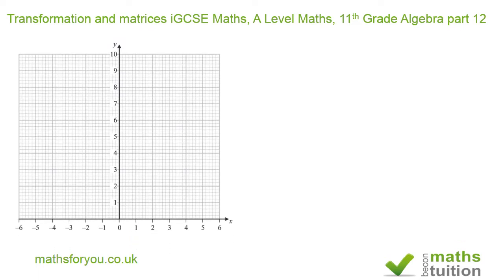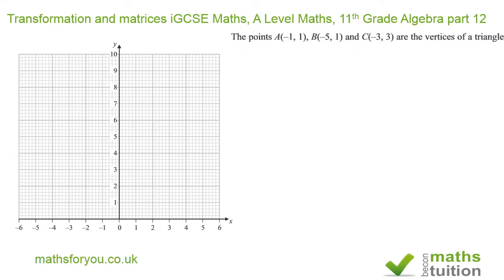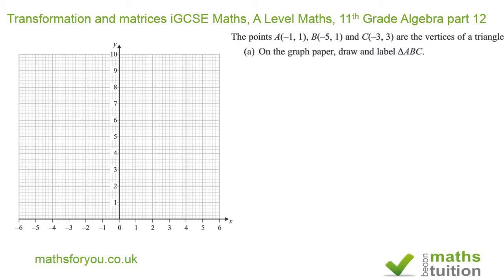The question itself carries 11 marks out of 11 questions in the paper. We've got a graph given to us and it says the points A(-1,1), B(-5,1), and C(-3,3) are the vertices of a triangle. Then it says on the graph paper draw triangle ABC.